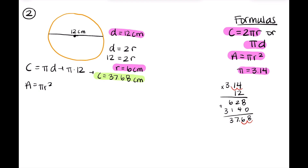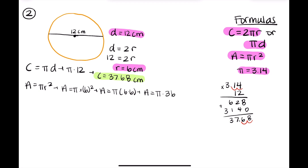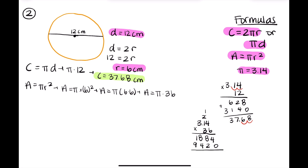Now we can move on to our area equation. For area, we use pi R squared. Substituting in 6 centimeters for our radius: A equals pi times 6 squared, which is the same as pi times 6 times 6. We know that 6 times 6 is 36, so A equals pi times 36. Doing 3.14 times 36 gives us 113.04. Our units for area are units squared, so our answer is 113.04 centimeters squared.